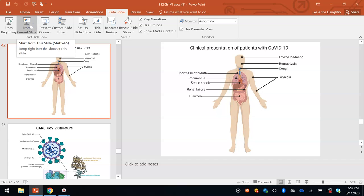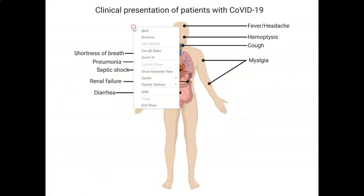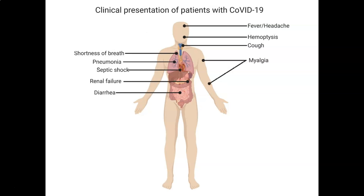We have gotten to the point where we're talking about COVID-19. This shows a picture of the symptoms and where they occur in the body. Everyone doesn't get every symptom, but there usually is a low-grade fever along with a headache and a cough. This is presented in the early stages. There can also be myalgia, which is pain in the upper and lower arm.